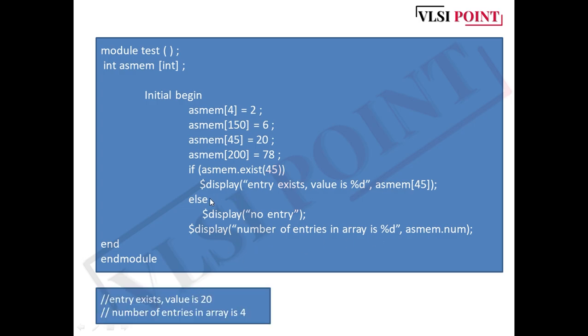The first output of this $display is entry exists value is 20 because at 45th position the value 20 is allocated. The next $display command is number of entries in array. You can see here total 4 entries are there in this array. So it will print number of entries in array is 4.